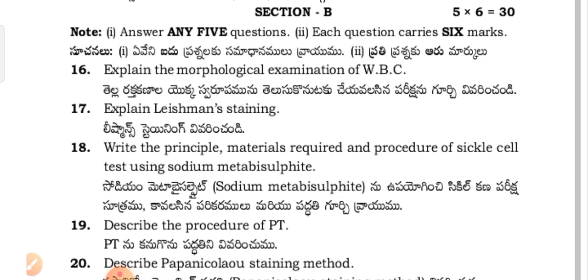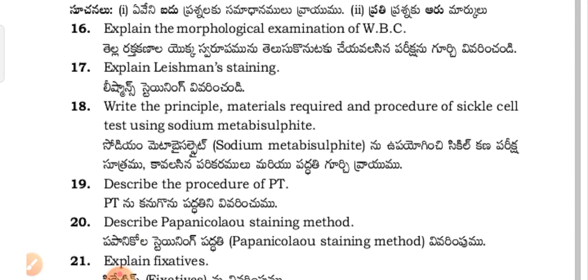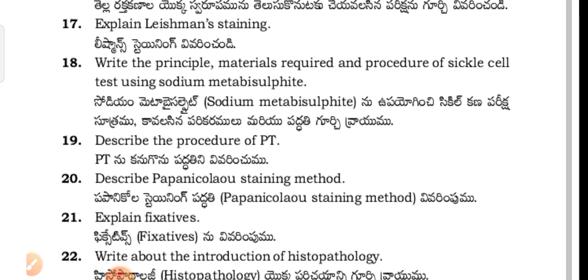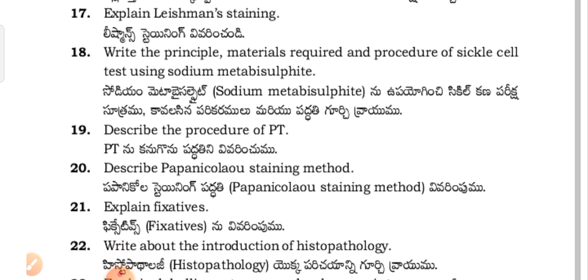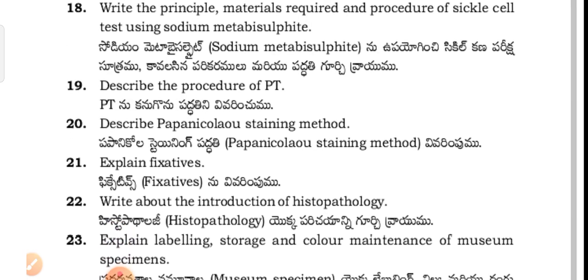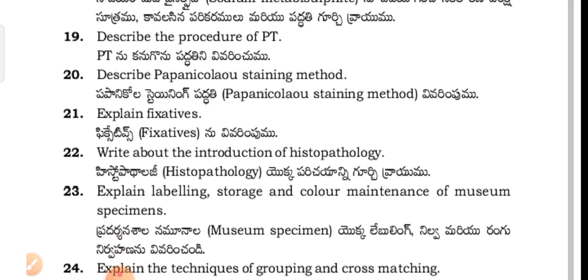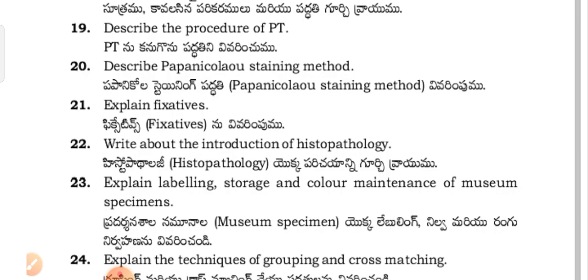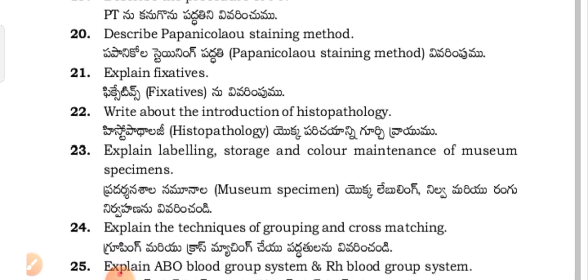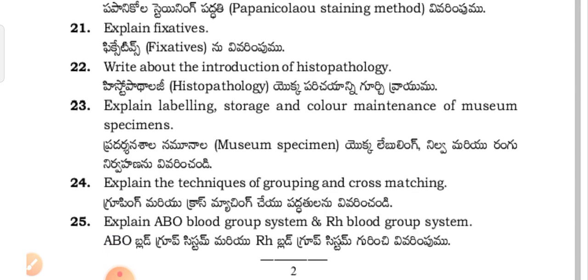Crescent cells — test using sodium metabisulfate. Describe the procedure of PT (Prothrombin Time). Papanicolaou staining method — write about Papanicolaou staining. Write about the introduction of histopathology.